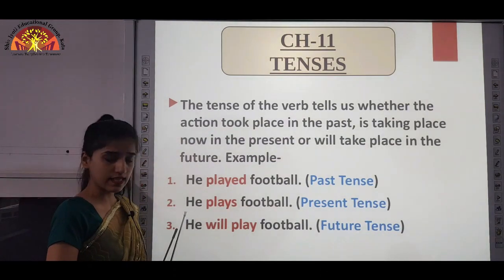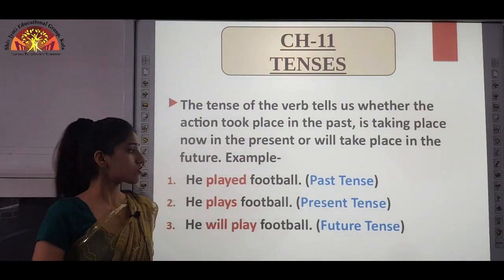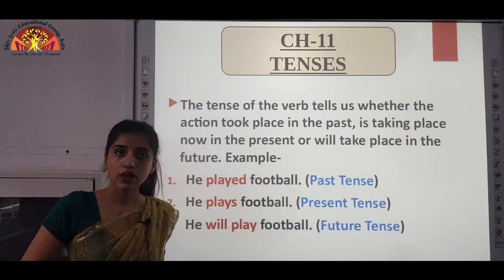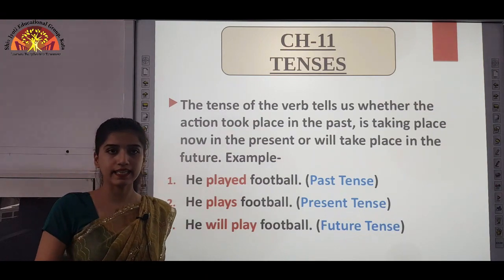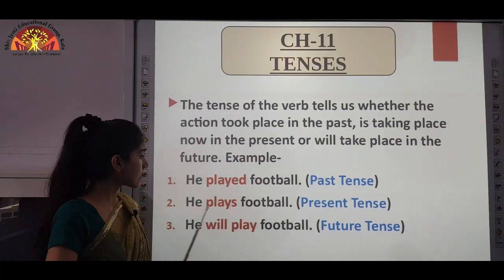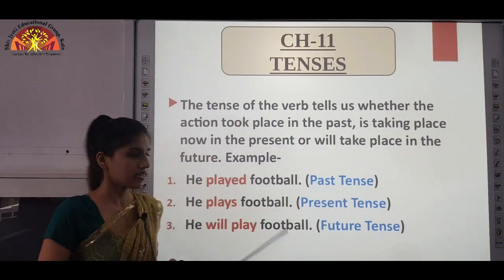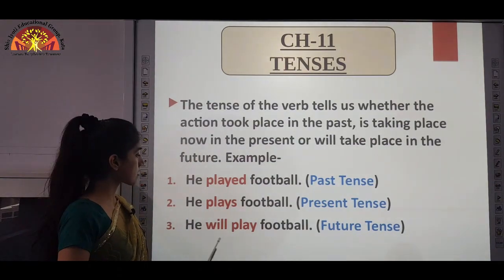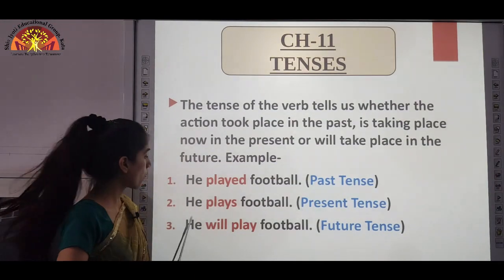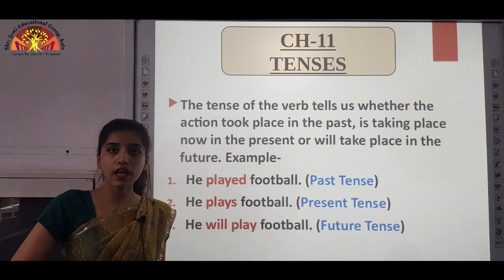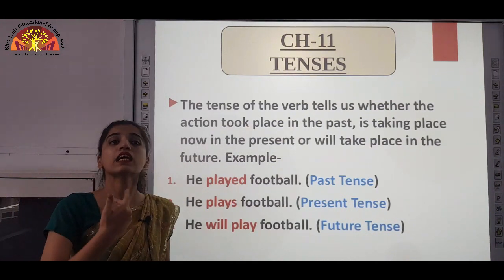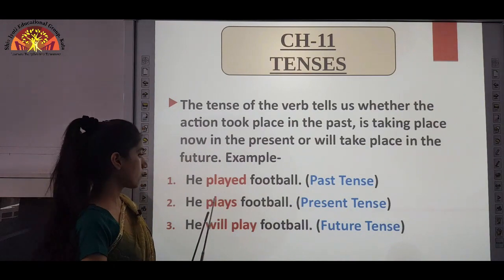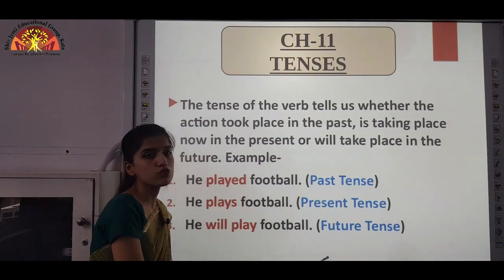In the second sentence, 'He plays football' — wo football khelta hai — the verb is denoting the present tense because the action is done in the present. In the third sentence, 'He will play football' — will play denotes the future tense. So the first sentence was past tense, second was present tense, and the third was future tense.